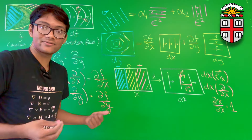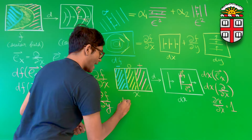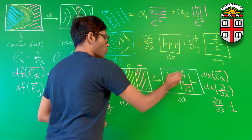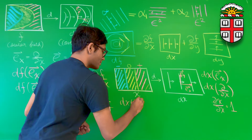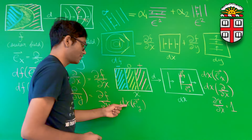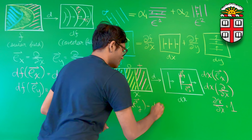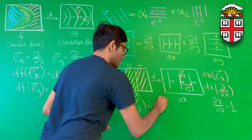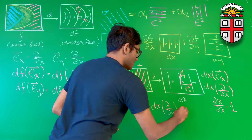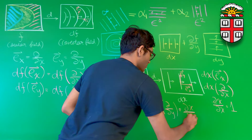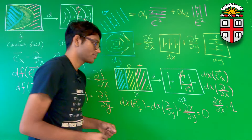Similarly, how many contour lines does my y basis vector pierce? What is dx applied to e_y? That's dx(∂/∂y) = ∂x/∂y = 0. And now we can apply the exact same reasoning to our y differential vector.